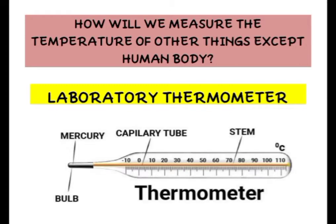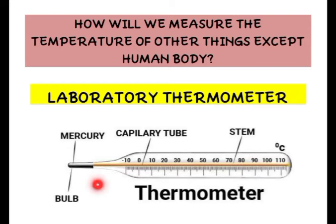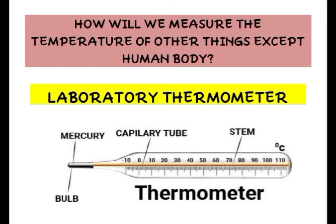Let us see the diagram of a laboratory thermometer. If you observe it, you will notice it is not similar to a clinical thermometer. In a clinical thermometer, the temperature ranges from 35°C to 42°C only. But in the laboratory thermometer, the temperature ranges from minus 10°C to 110°C, because this thermometer is used to measure things other than the human body. The temperature might decrease to minus 10 or increase up to 110°C.